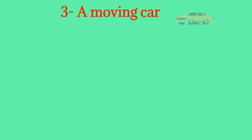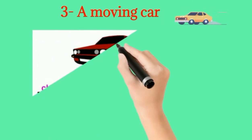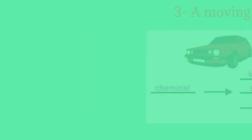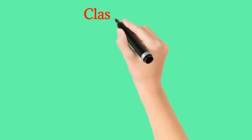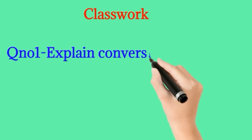The third example is a moving car. This diagram shows the conversion of energy in a moving car. The chemical energy stored in the car is converted into kinetic energy, sound energy, and heat energy.